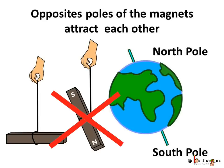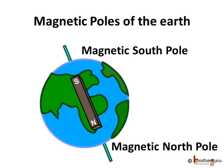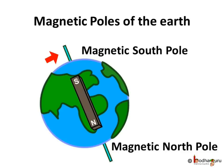This is not true — wait, confused? Let us clear our confusion. Till now we were talking about the geographical North and South Poles of the Earth. The magnetic South and North Poles of the Earth are situated differently. The magnetic North Pole of the Earth is actually the geographical South Pole, and the magnetic South Pole of the Earth is actually the geographical North Pole. Let us reiterate: the magnetic North Pole of the Earth is the geographical South Pole, and the magnetic South Pole of the Earth is the geographical North Pole.